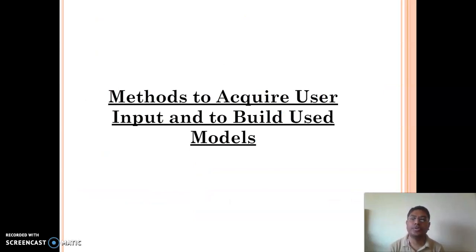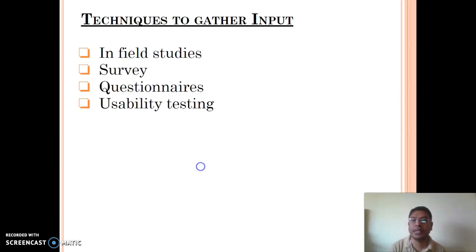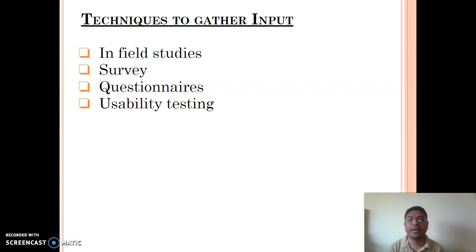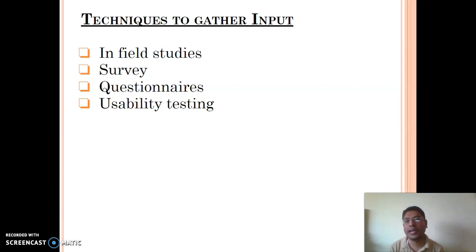The next part covers methods to acquire user input and build user models. Various methods are available: in-field studies, surveys, questionnaires, and usability testing. Through in-field studies we gather data directly. Surveys and questionnaires are circulated among users to collect data. Usability testing also allows us to collect data from the user. All four techniques help us collect the necessary data.